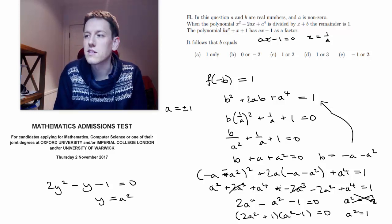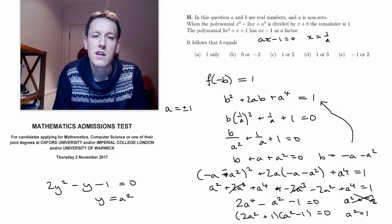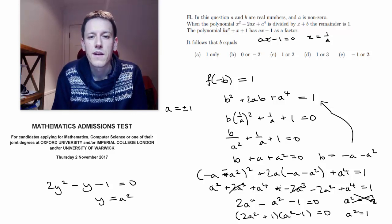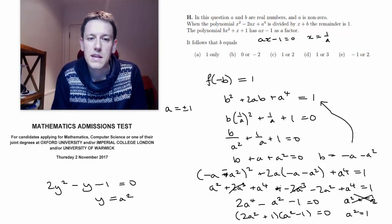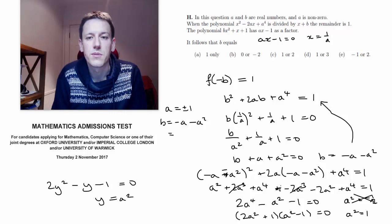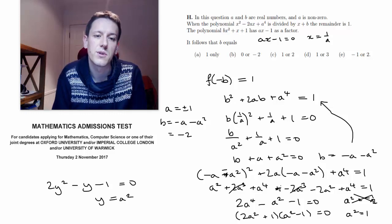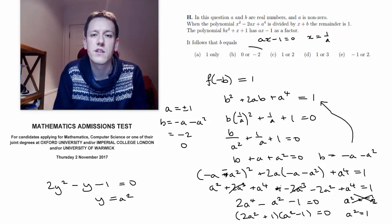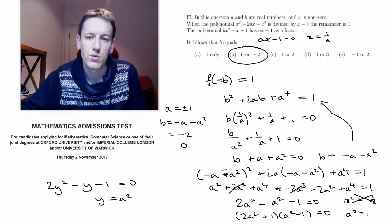Okay, so I'm going to use this little bit of space in here, so I can keep it all on one page. If a is plus or minus 1, then we know that b equals minus a minus a squared, so if a is plus 1, this gives us minus 1 minus 1, which is minus 2, and if it's minus 1, it gives us plus 1 minus 1, which is 0, so the answer is b equals 0 or minus 2.